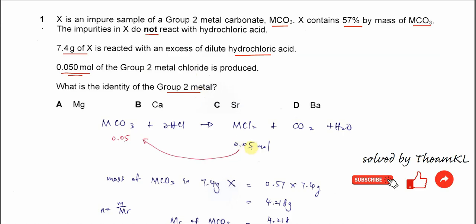In order to solve this question, you need to construct the equation. If you're good enough, you don't need to do this. From here, we know that 1 mole of metal carbonate, Group 2 metal carbonate, reacts with 2 moles of HCl, produces 1 mole of MCl2.